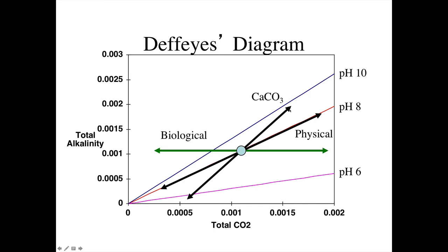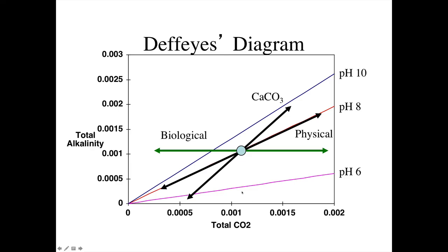Conversely, if you precipitate calcium carbonate, the pH goes down — you consume more alkalinity than CO2 and approach the pH 6 line. For biological processes: respiration increases total CO2 but not alkalinity, so we go from pH 8 toward about pH 7. Photosynthesis consumes total CO2 but doesn't change alkalinity, so pH goes from 8 up toward 10.